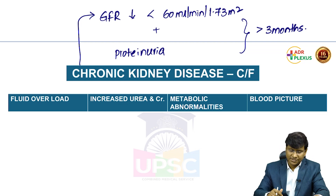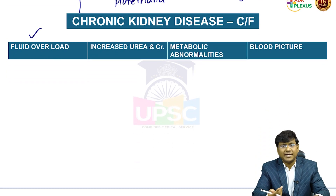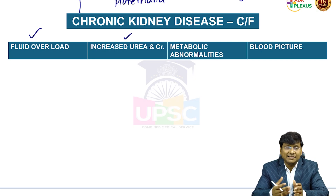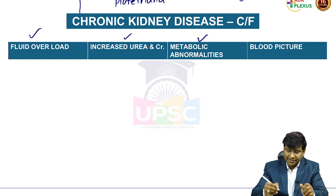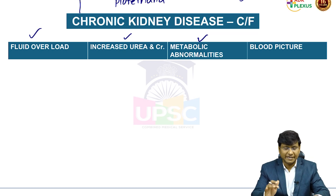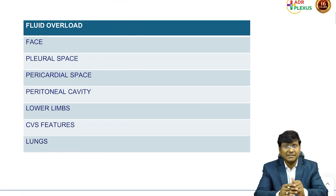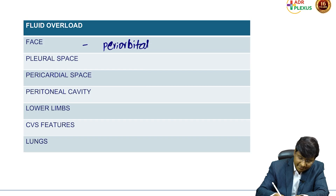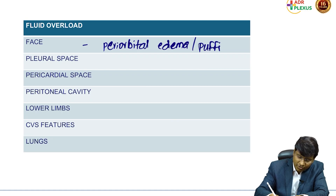In chronic kidney disease, clinical features are mainly because of fluid overload, since urine output is reduced. There is also increase in urea and creatinine — nitrogenous waste products that have to be excreted through the kidney. Due to fluid overload, within the face these patients will have periorbital edema and facial puffiness.